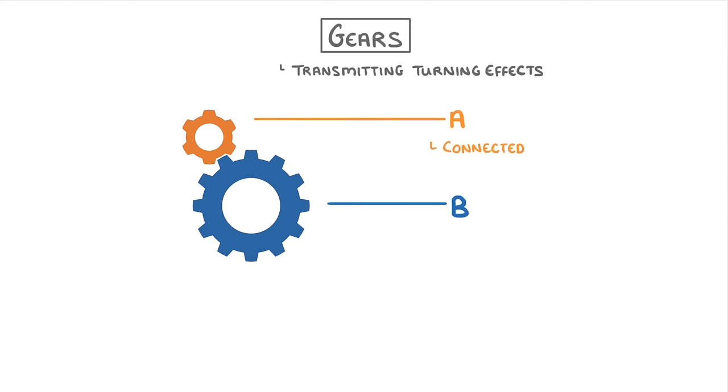Gear A is connected to the engine, which provides it with a turning force so that it rotates. Meanwhile, gear B is connected to the wheels, so if gear B rotates, then the wheels will rotate as well.